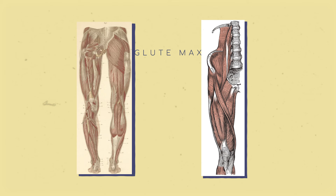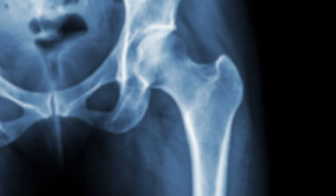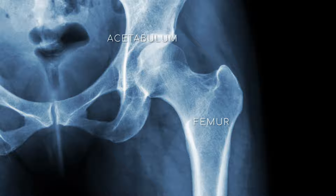In ball and socket joints, we see a greater number of smaller muscles than in hinge joints, but we still have some big movers — like the glute max, the iliopsoas, or rectus femoris. The femoroacetabular joint is much deeper than the shoulder, which makes it more stable and capable of movement from powerful muscles.